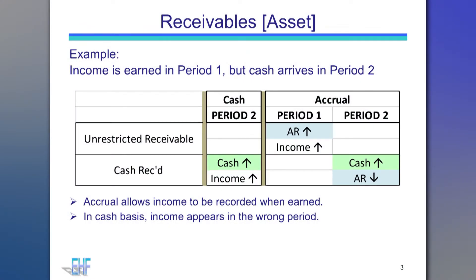Our first accrual concept is receivables, which is an asset account on your balance sheet. In this example, the organization earned the income before the cash was received. Accrual accounting allows the revenue earned for program services during period 1 to be recorded as receivable income when earned, even though the cash payments did not arrive until period 2. When the payment is received, the cash asset is increased and the receivable asset is reduced. Income is not affected.